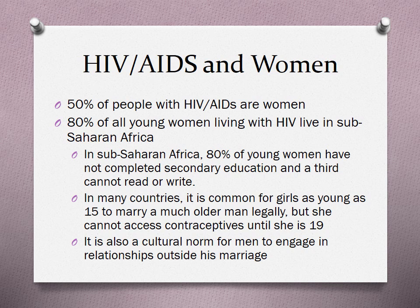Why is this a big deal? The foreskin, when it's not cut off, keeps the HIV virus tucked in and away from oxygen. The HIV virus, as soon as it hits oxygen, it dies. So when the HIV virus doesn't have a chance to hide under the foreskin, it's less likely to transmit to someone else.